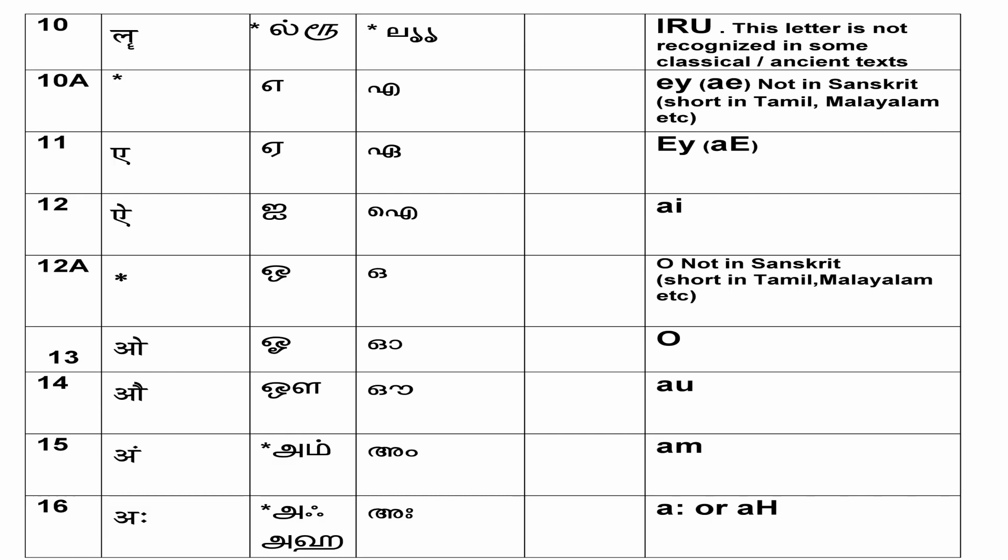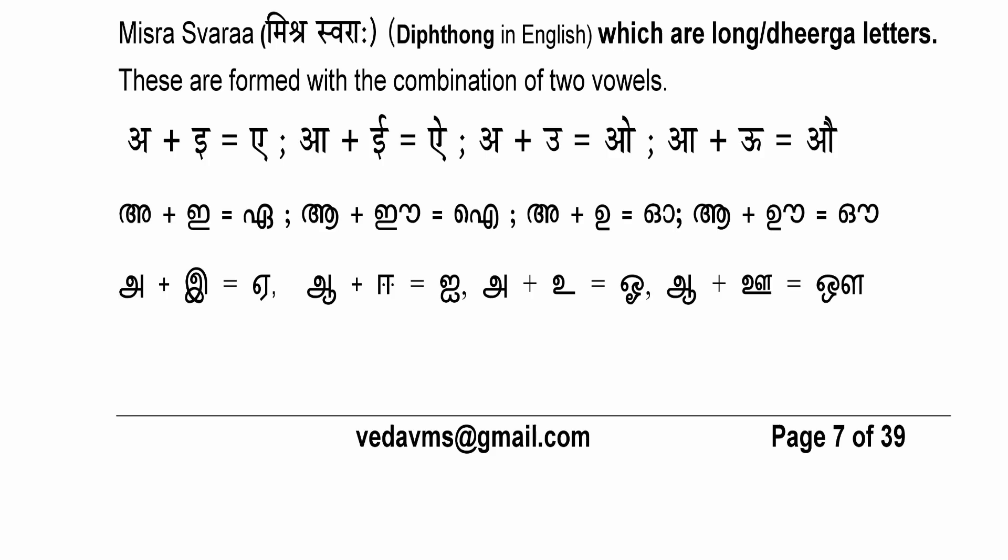The next letter is 'ai'. It is a combination of 'a' and 'ee' — both long. When you say 'a' and 'ee' together slowly, you get an 'ai' sound, like the sound of the English word 'eye'. Therefore 'a' and 'ai' are formed from combinations of two basic swaras — these are called misra swaras, meaning mixed vowels, or diphthongs in English.